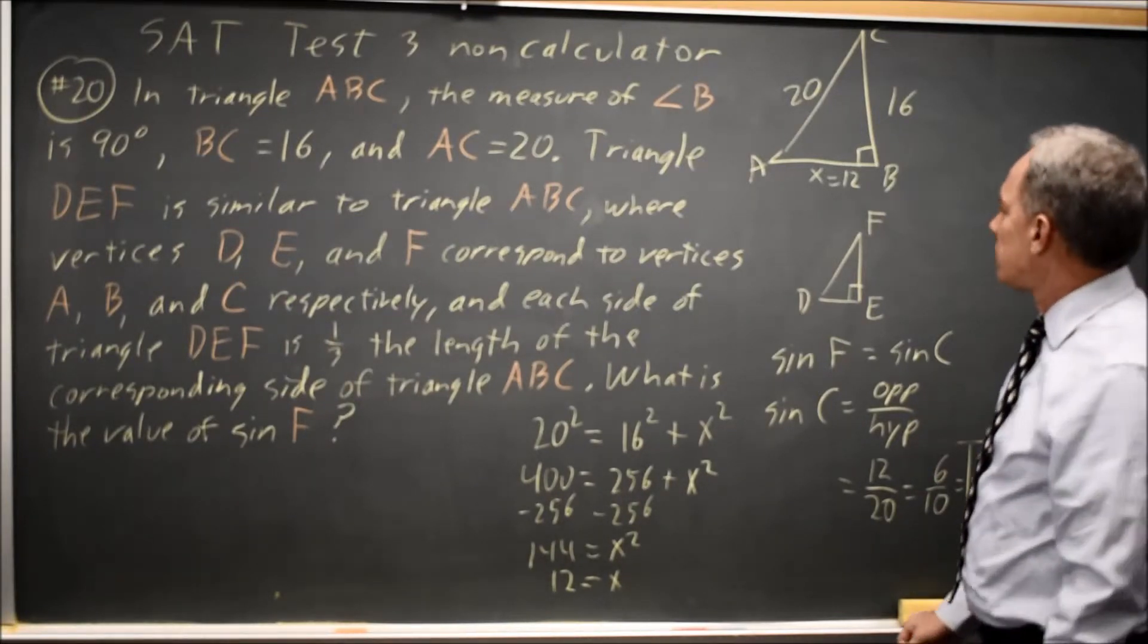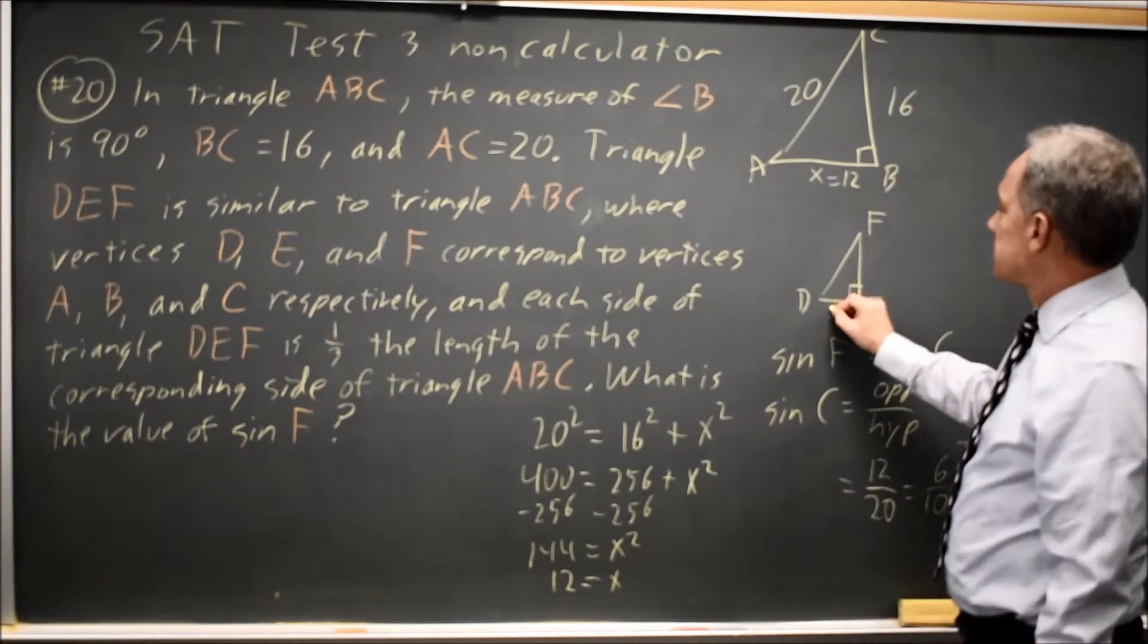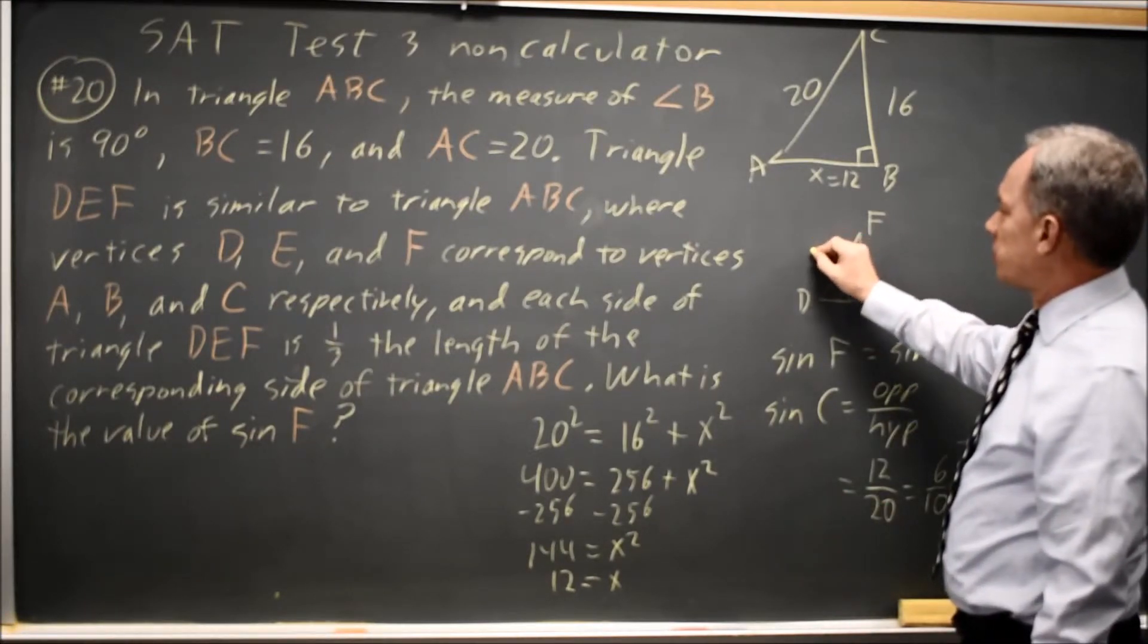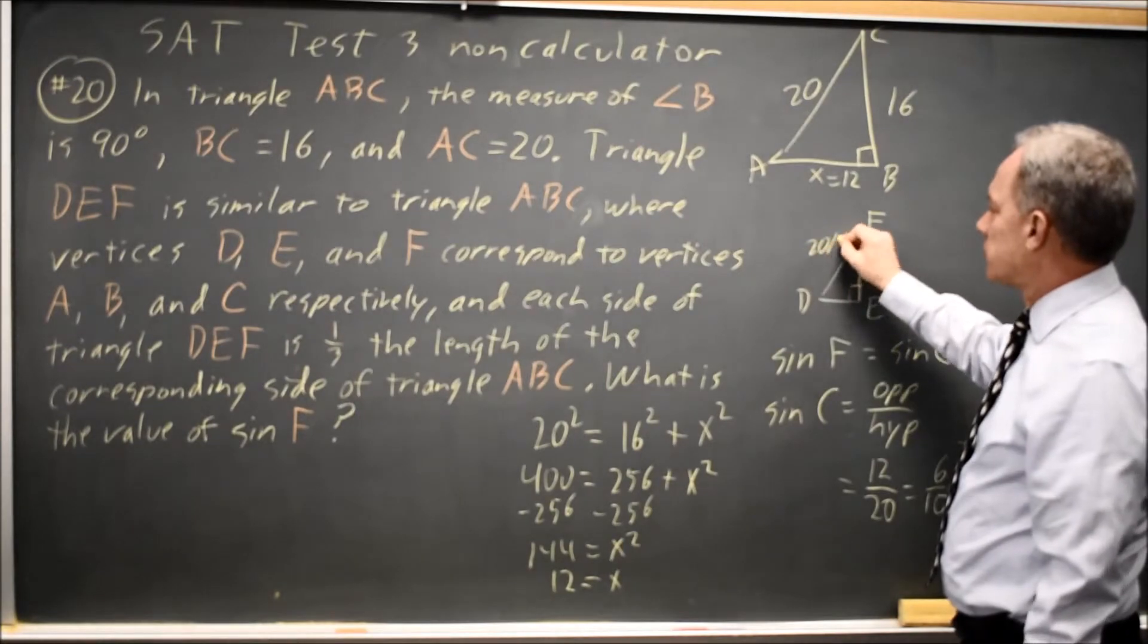Alternatively, I could find the lengths of these sides, since each side is one-third of the corresponding side, 20 over 3, 16 over 3,